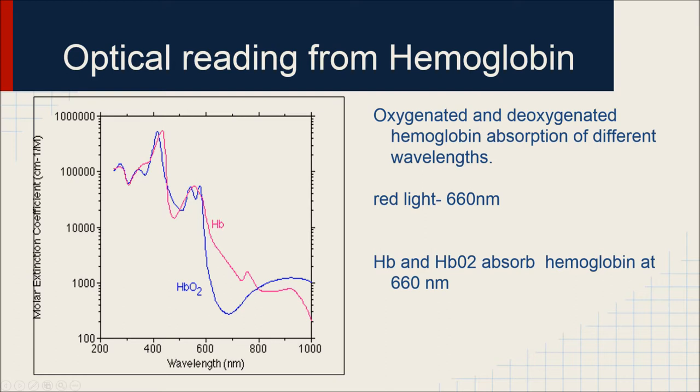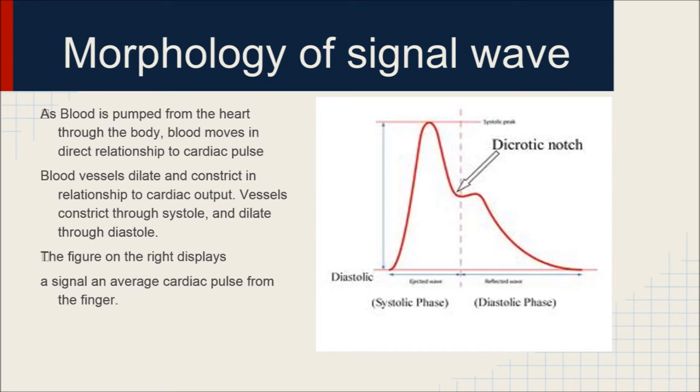What creates the pulse is the change in blood volume from cardiac pulse. Each of our heartbeats goes through a systolic and a diastolic phase as it pumps blood.